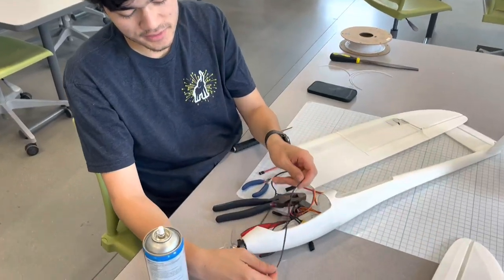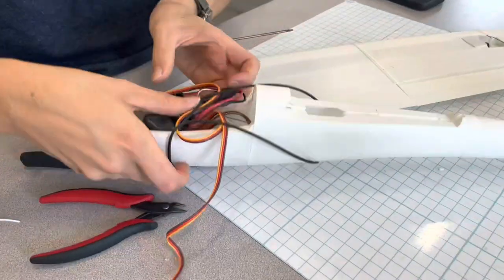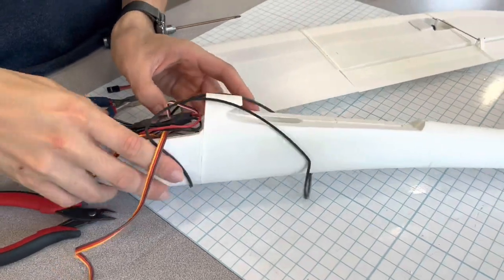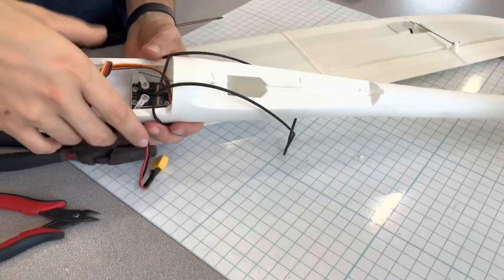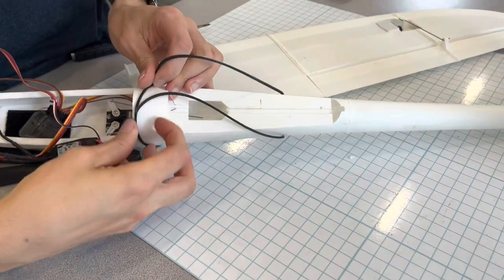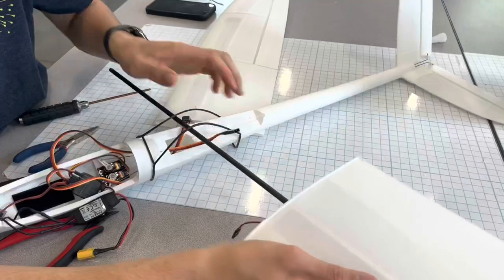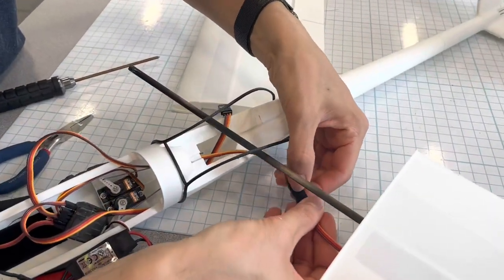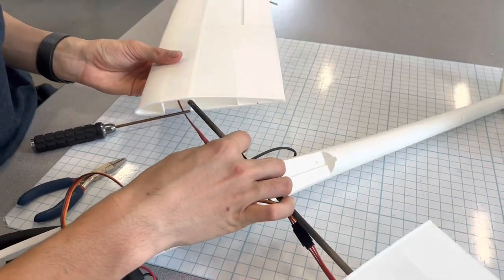Now you're going to slide this printable flex piece on, which can also be substituted with a rubber band. Now connect your servo extensions together. Insert your carbon rod into the wing assembly. Plug in the other servo and put the wings together.